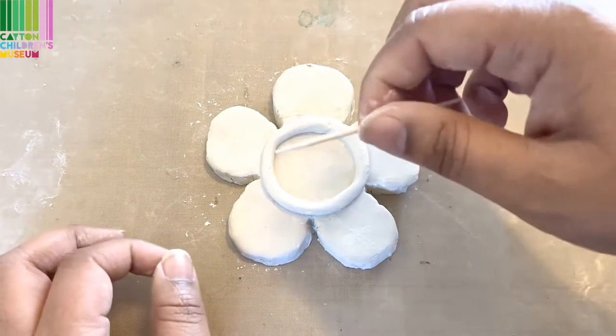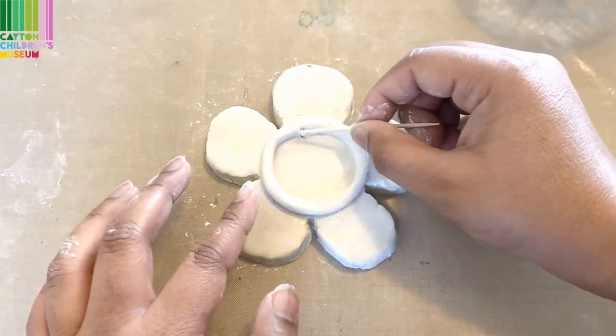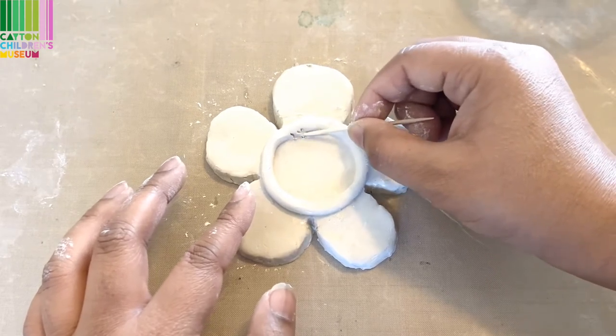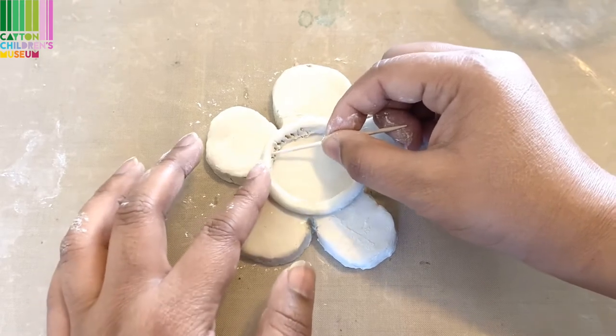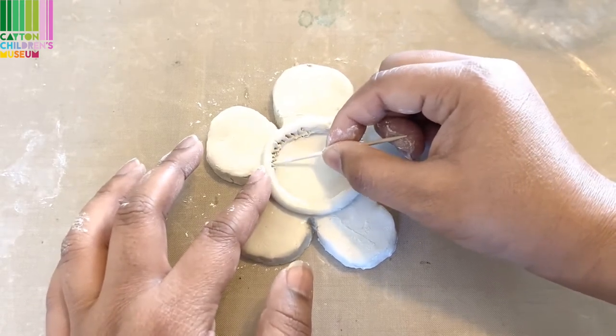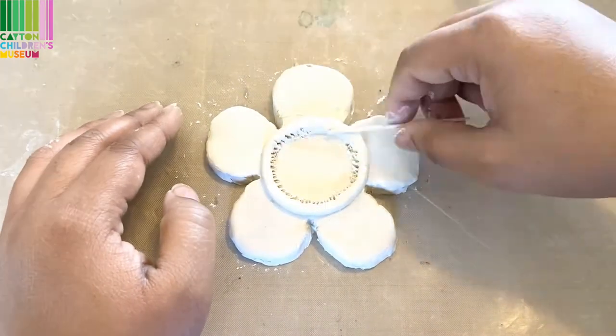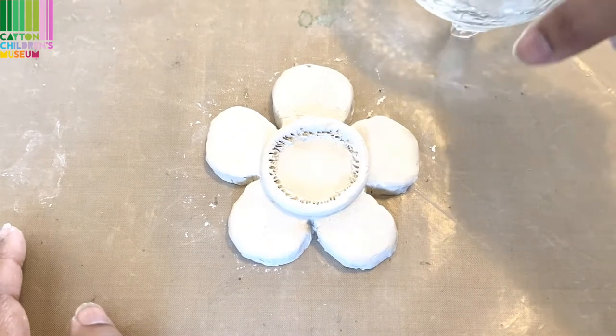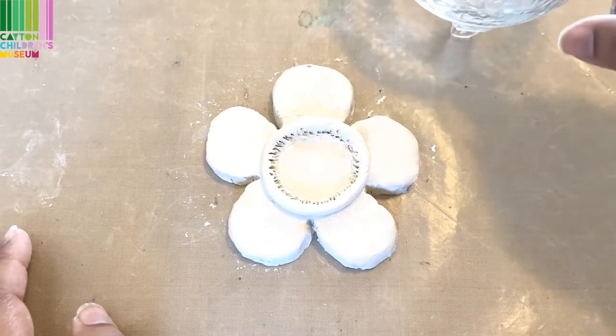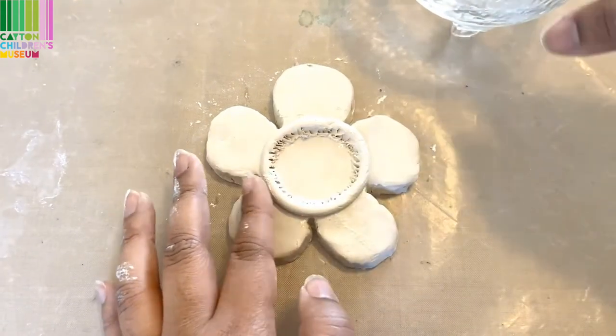Next, I'm just going to take a toothpick and drag this down a little bit. Just so that it attaches a little more. Next, I'm just going to put my finger in some more water and try to smooth this out as best as I can.